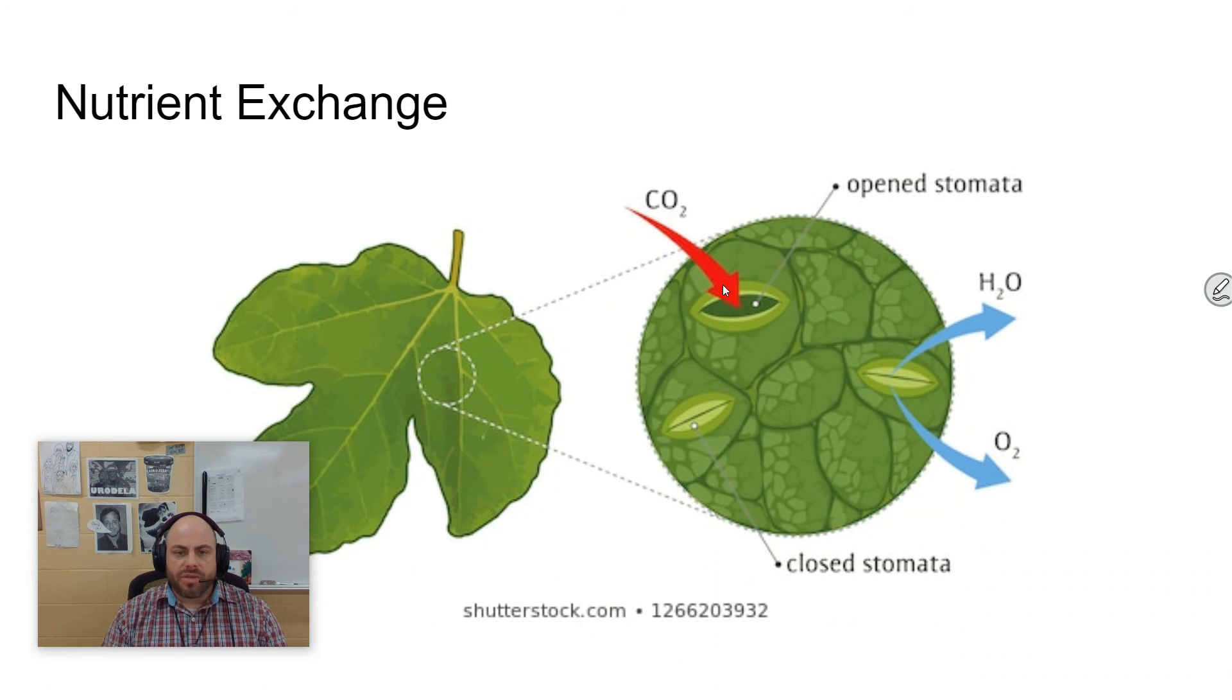These openings provide more surface area with the surrounding environment. It allows CO2 to come in for photosynthesis, allows H2O and O2 to leave the cell, which the H2O leaving the cell pulls water up from the roots and allows water to flow completely through the plant using capillary action. And so the surface area to volume ratio, even on a macroscopic level is very important for things like nutrient exchange and heat regulation.